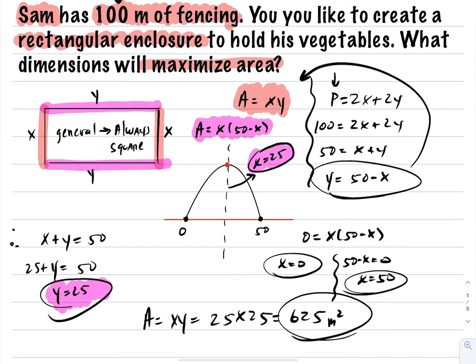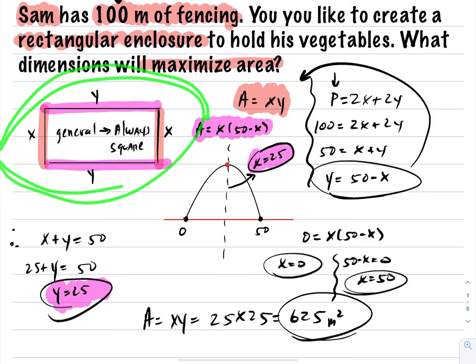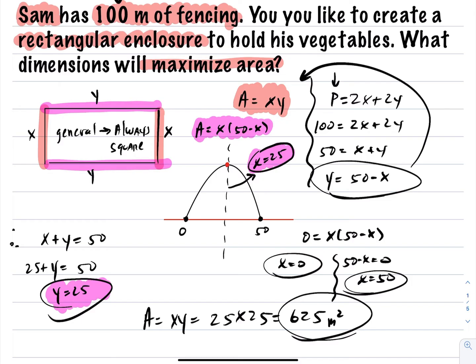This is true in general: whenever you're maximizing a rectangle with four sides, it will always be a square. So if the question changed 100 meters to 200 meters, you'd just divide by four to get each side's length. If it was 500 meters, divide by four. In general, for a four-sided rectangle, turning it into a square always gives maximum area.